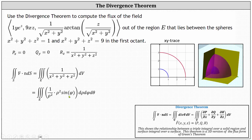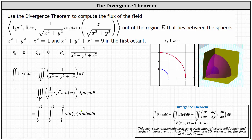Next we simplify the integrand and determine the limits of integration. I've included the x,y trace as well as a three-dimensional graph of the spheres in the first octant. The integrand simplifies to just sine phi. The limits of integration for rho are from one to three, as seen on the x,y trace. Because we're only concerned with the first octant, the limits for phi — the angle from the positive z-axis — are from zero to pi divided by two. And from the x,y trace, theta is also from zero to pi divided by two.